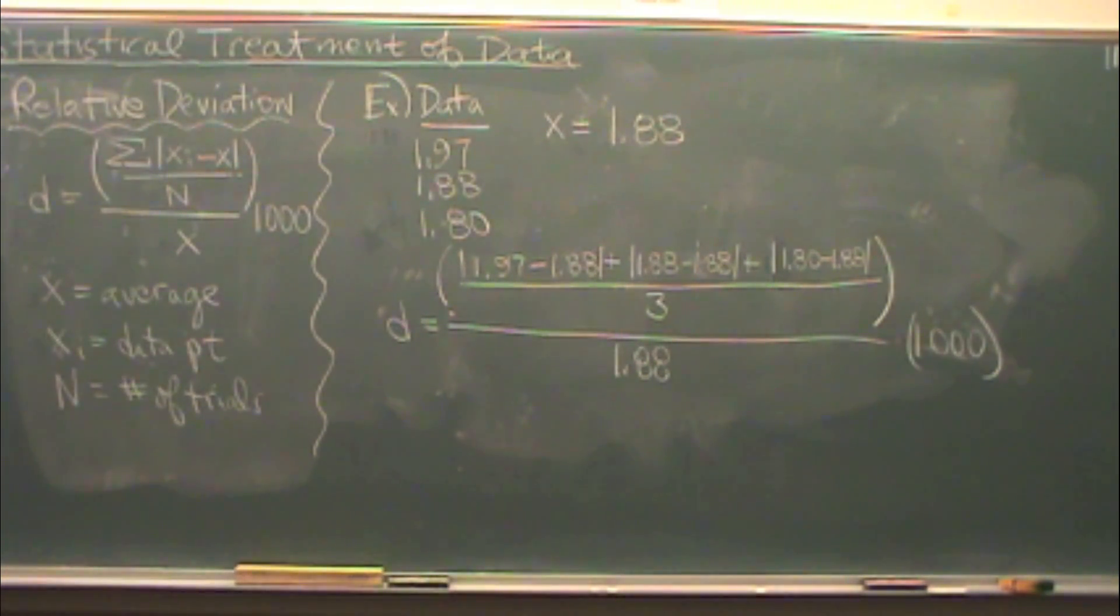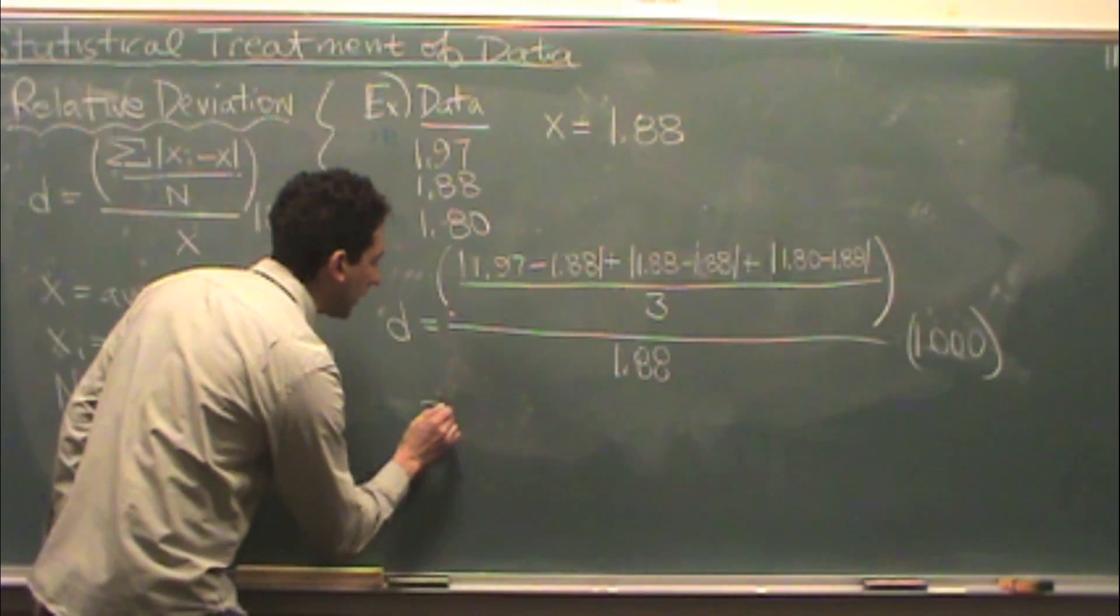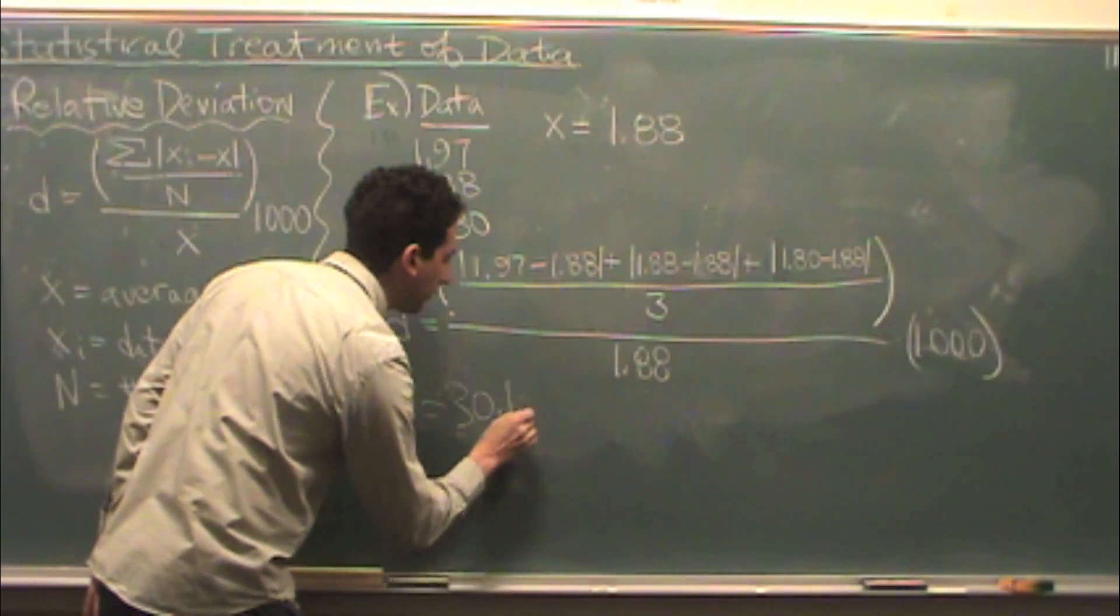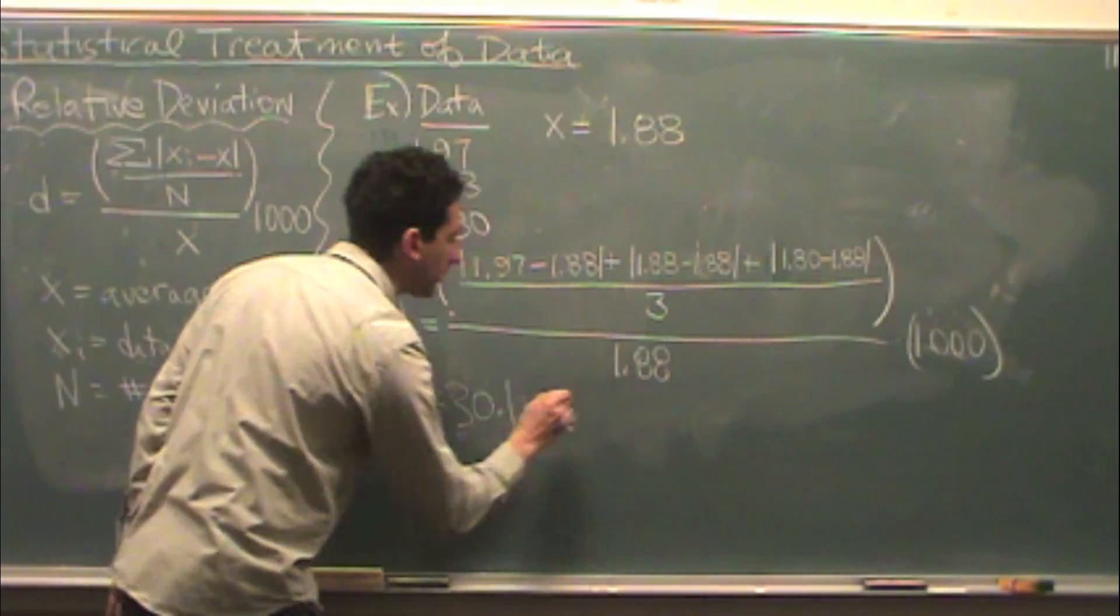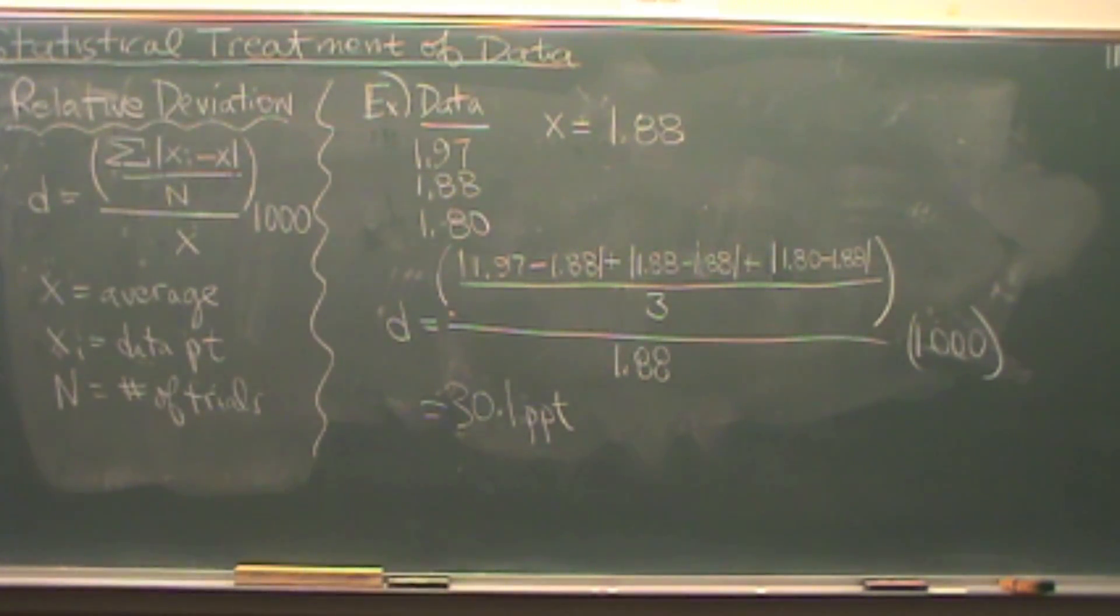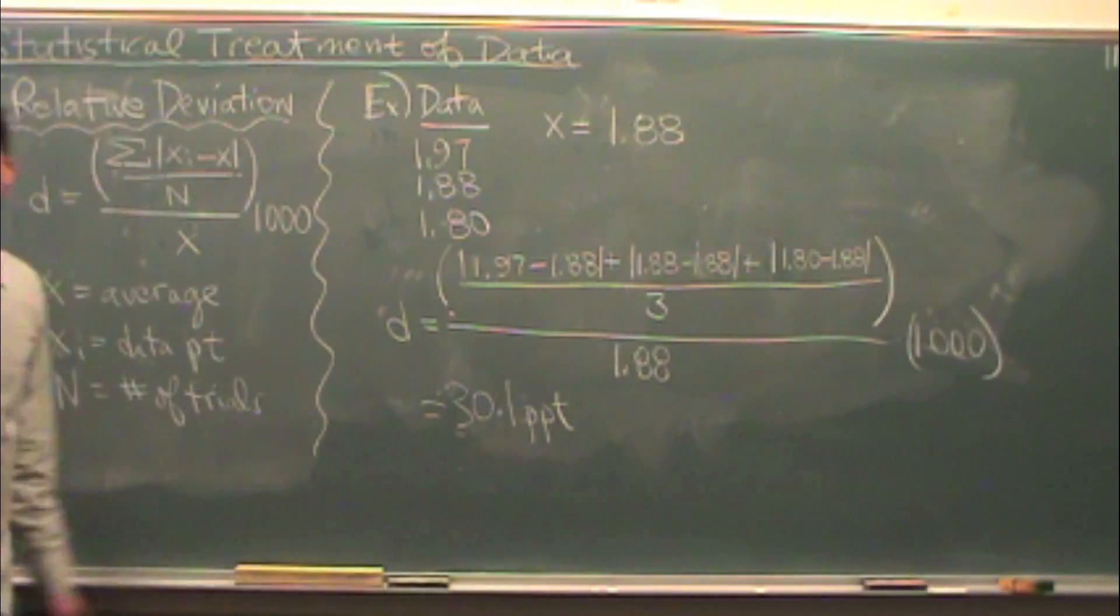In this case, I got 30.1, and I'll put PPT here. Again, that means parts per thousand. The smaller this number is, the more precise that your data is.